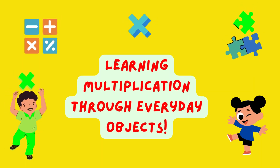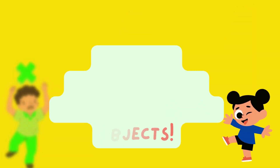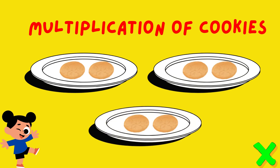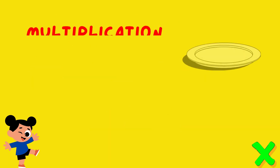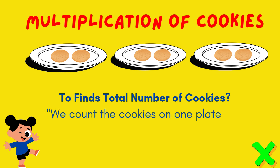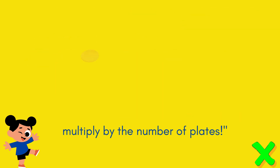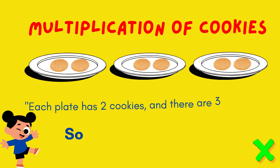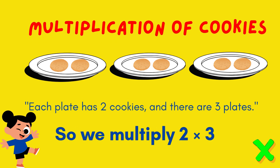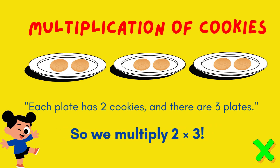Learning multiplication through everyday objects. Multiplication of cookies defines the total number of cookies. We count the cookies on one plate and multiply by the number of plates. Each plate has two cookies and there are three plates, so we multiply two times three.